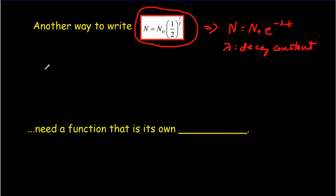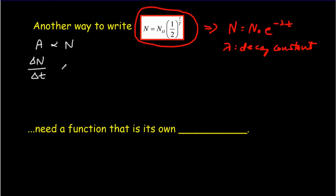You'll recall that the number of decays is always proportional to the number of particles. In other words, if you've got more particles, you get more decays. We can express this idea by saying that the activity will be proportional to the number of particles. Activity is simply the number of decays, delta N, per unit time. So the number of decays per unit time will be proportional to the number of particles.